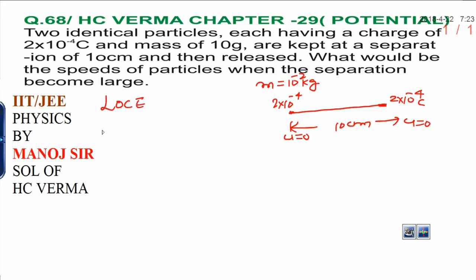you have only electric potential energy, that is 9×10⁹×2×2, 4×10⁻⁸, divided by separation between them, that is 0.1 meter,